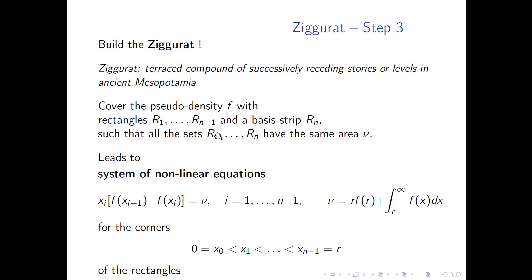Okay, so this procedure here leads to the following system of nonlinear equations. So x_0 up to x_(n-1), these are the corners of the rectangles, x_0 is 0, x_(n-1) equals r. And we have the condition that R_1 up to R_(n-1) and R_n are supposed to have all the same area nu. So the area of the base strip is given by this expression. It's r times f(r), that's the rectangular part. And here the integral is actually the tail part. The other rectangles, we get the area in this way. So it's x_i times the difference of f(x_(i-1)) minus f(x_i). And this should be equal to nu for i ranging from 1 to n-1 as the area of the base strip.